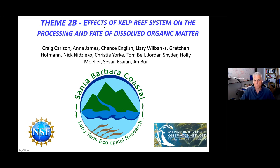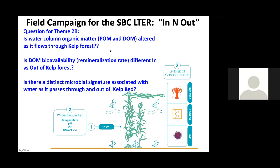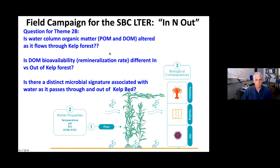Theme 2B is about the effects of the kelp reef system on the processing and fate of organic matter. The main questions we're trying to address: is the water column organic matter — POM and DOM — altered as water flows through the kelp forest?